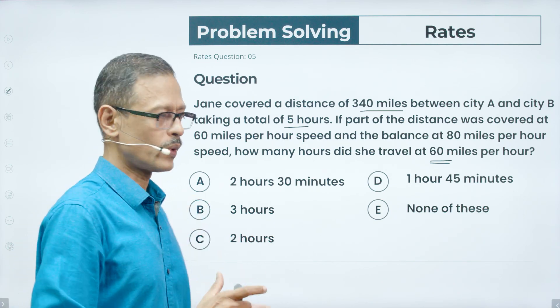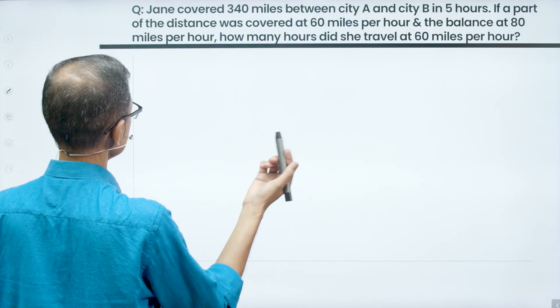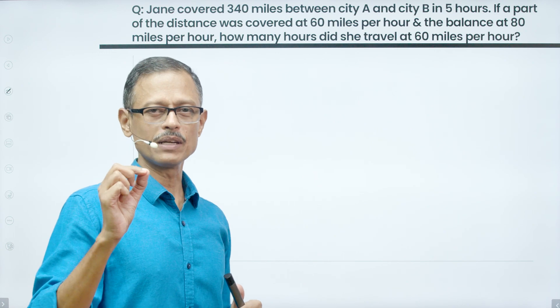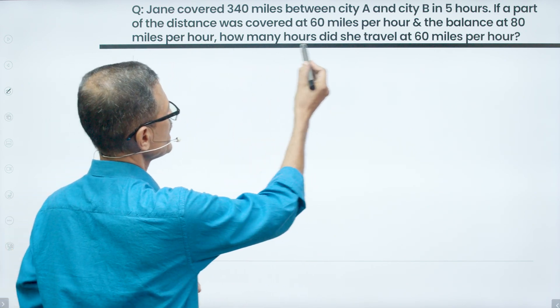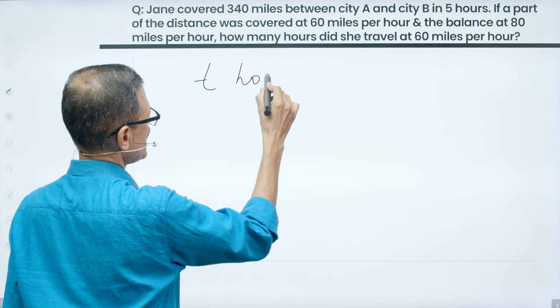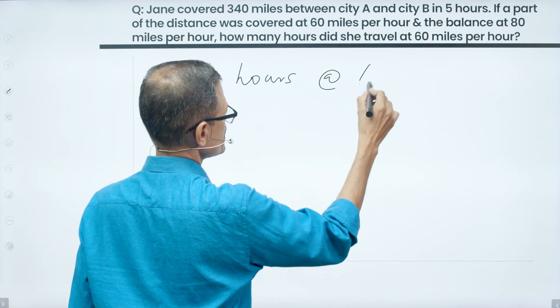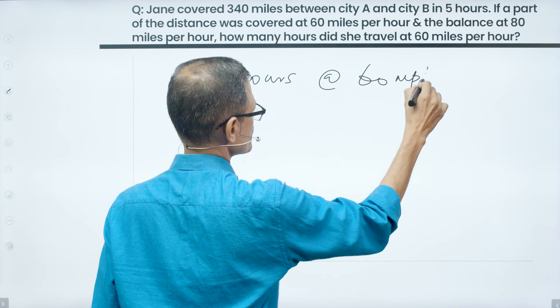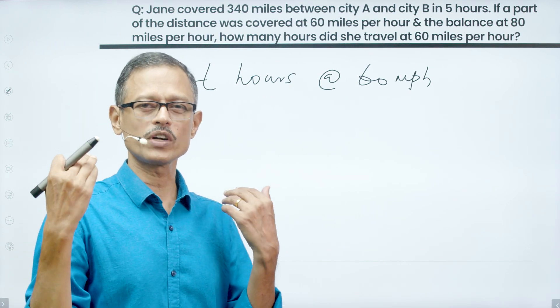Solve it using method 1. This is the most intuitive way to get started. I'm going to assign one variable. What we need to find out is how many hours did she travel at 60 miles. I'm going to say she traveled T hours at 60 miles per hour. This is the only variable I'm going to assign, which is what we need to find out.